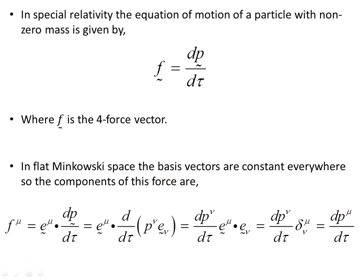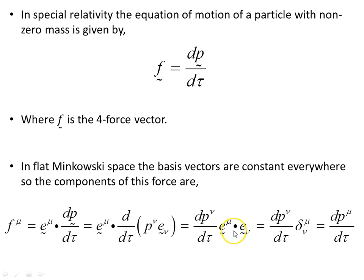In flat Minkowski space, the basis vectors are constant everywhere because it's flat space. We can find the components by using the scalar product — the dual basis vectors with superscript mu dotted with the proper-time derivative of the momentum 4-vector. Expressing the momentum 4-vector in terms of its basis vectors, dotting with the contravariant dual basis vectors gives the Kronecker delta, and setting indices equal we get dp^mu/d_tau — the components only.